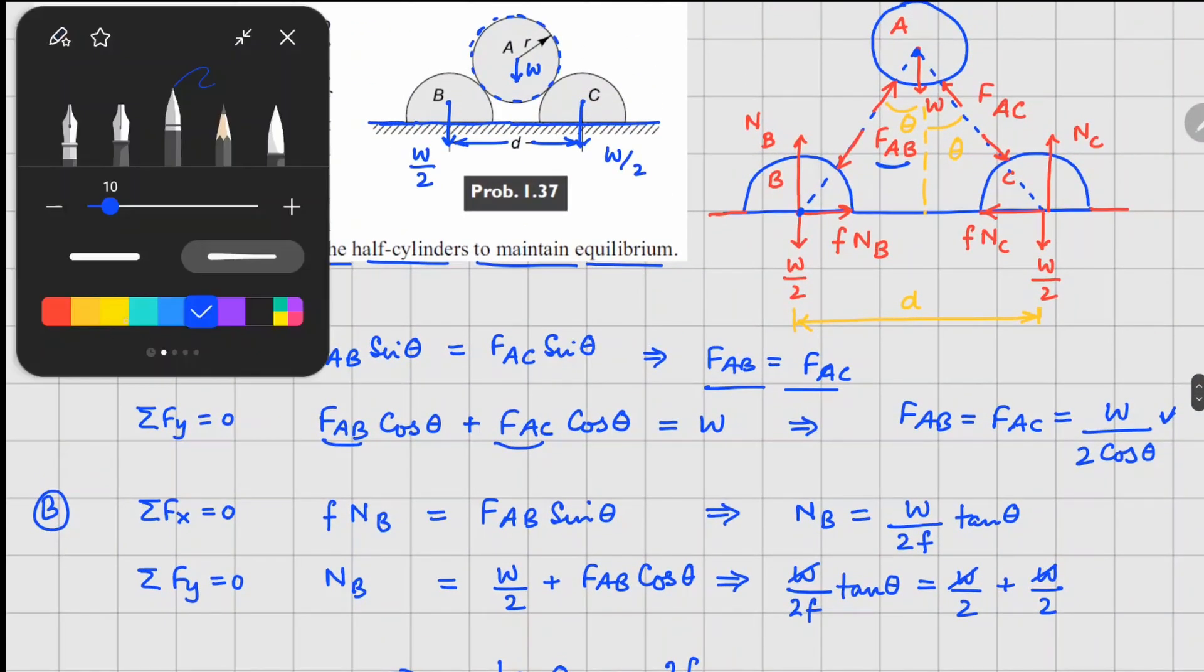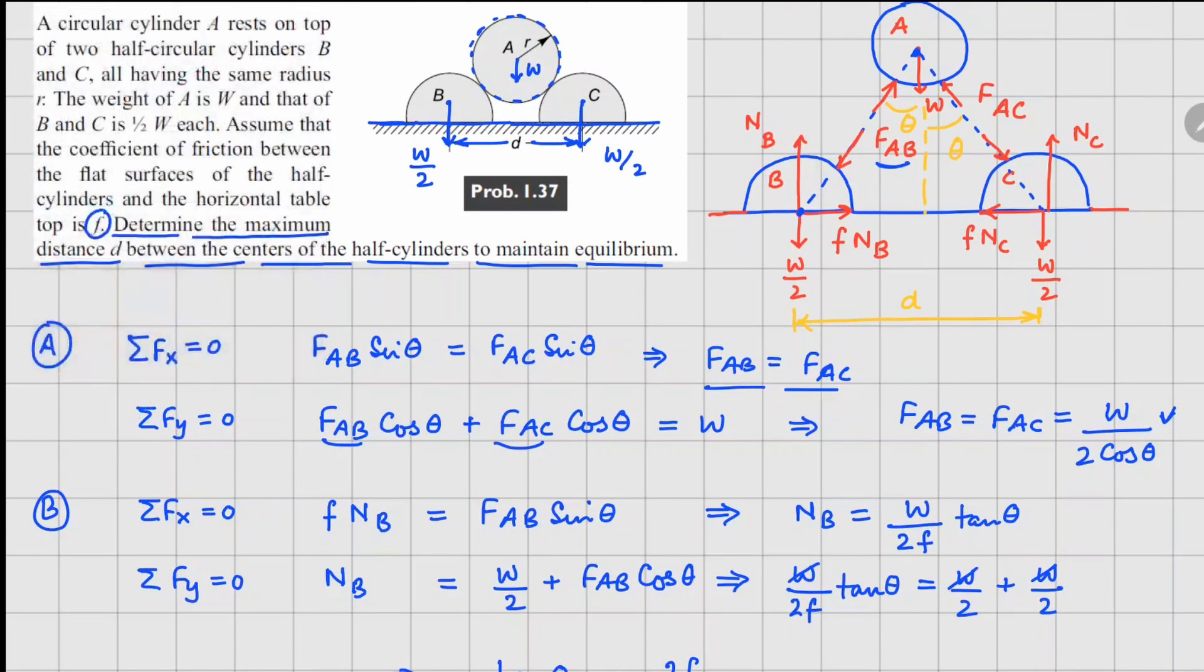And so now if we want to get a relationship between the distances and theta here, if I focus on this triangle right here, we are looking at this one here. So this distance here is d over 2. And this distance right here is 2 times radius. And since this angle is theta,